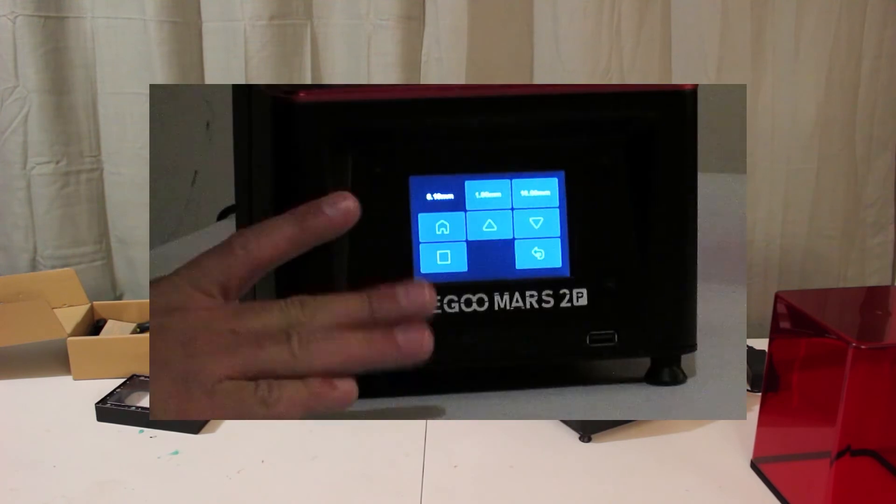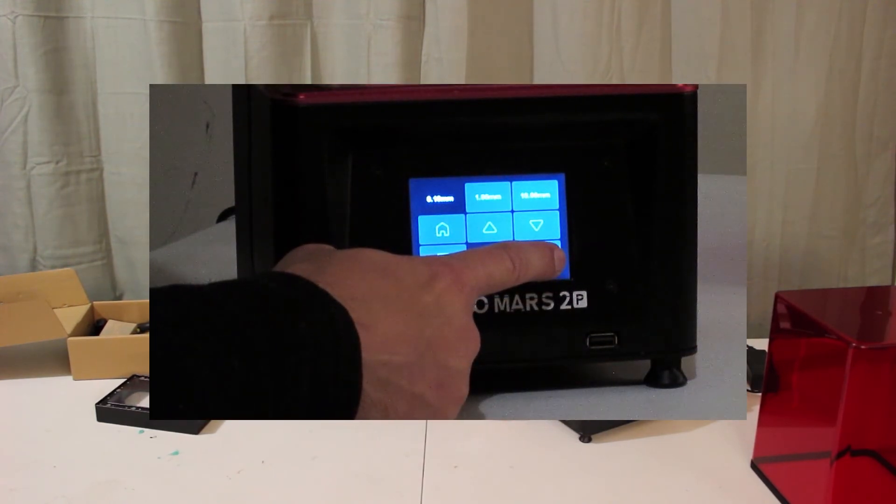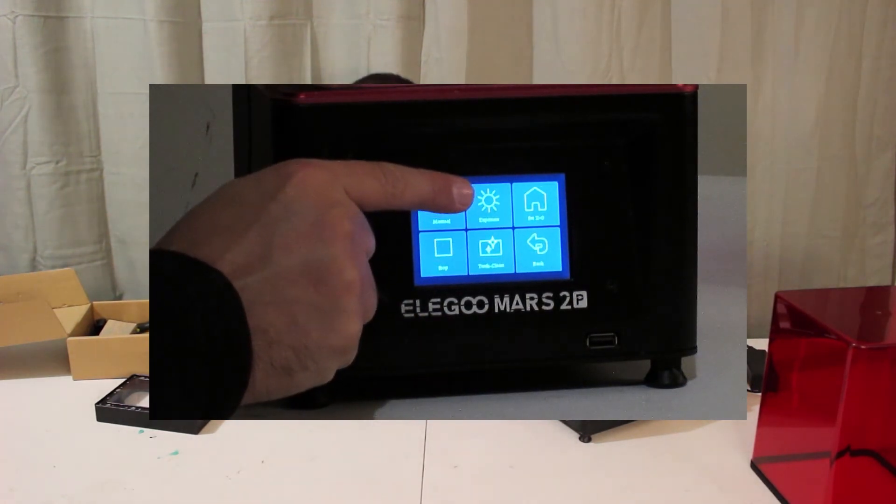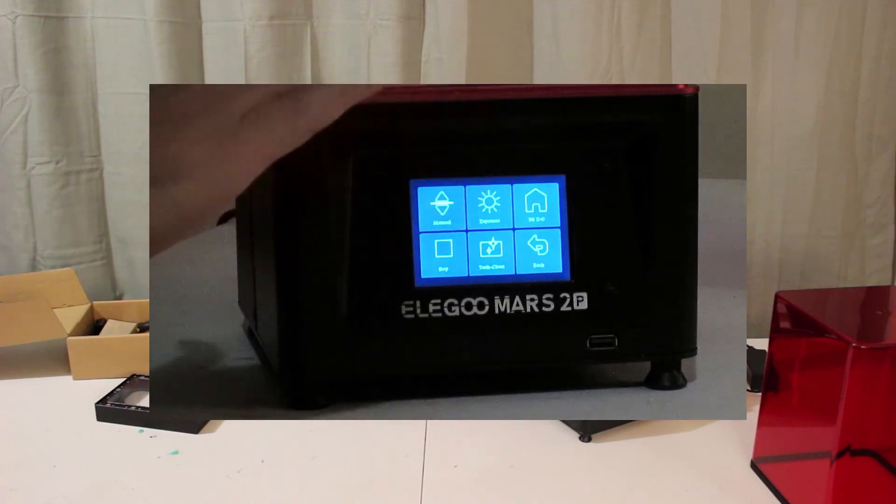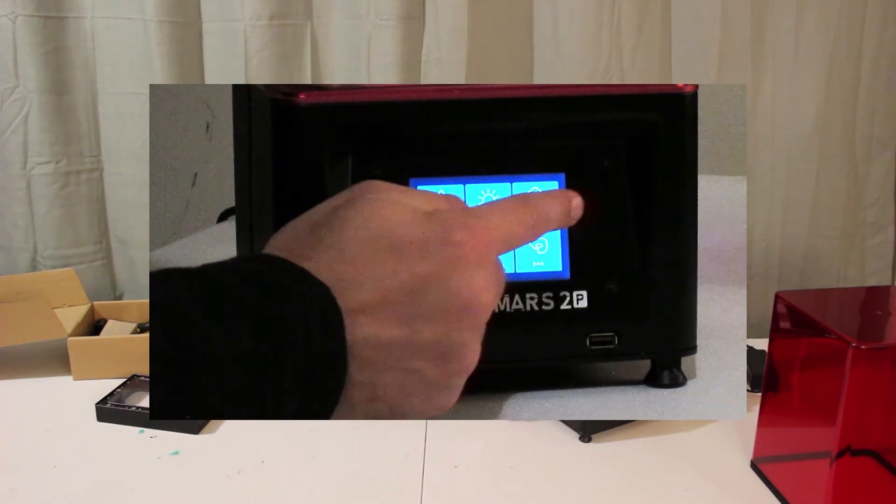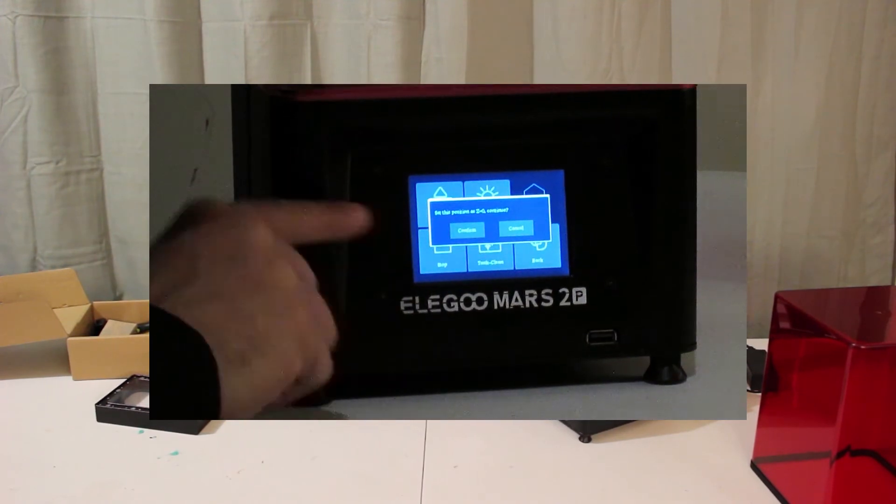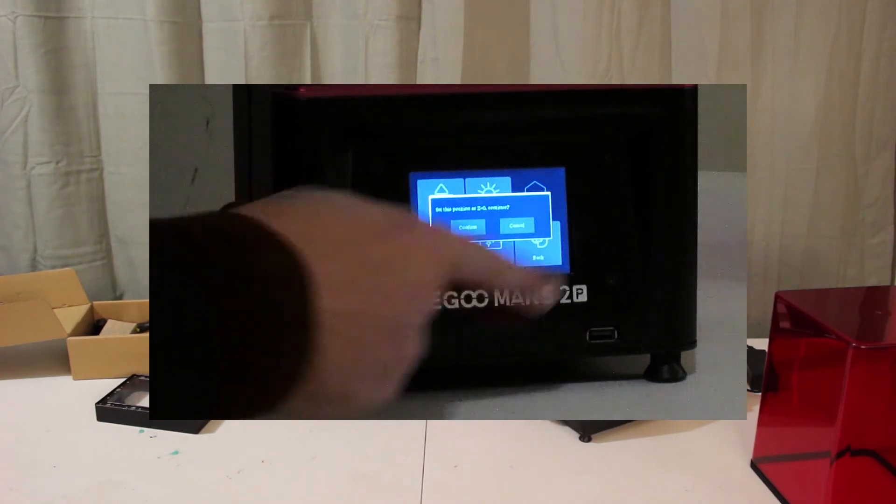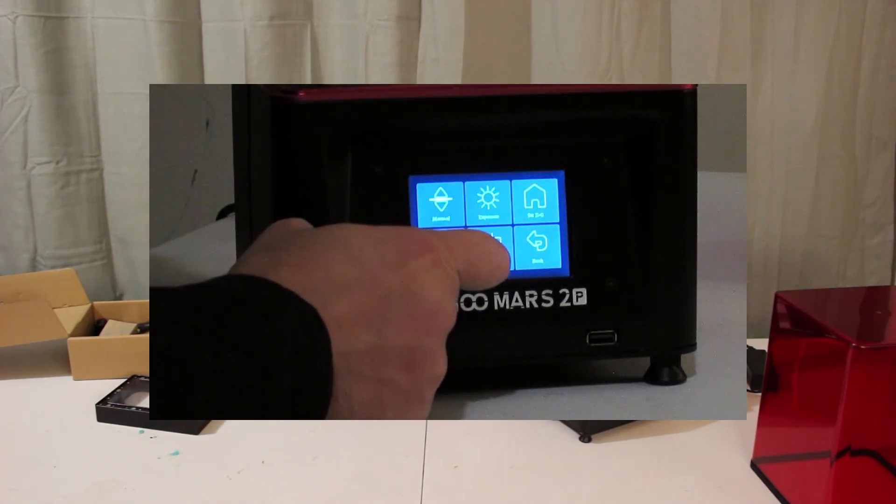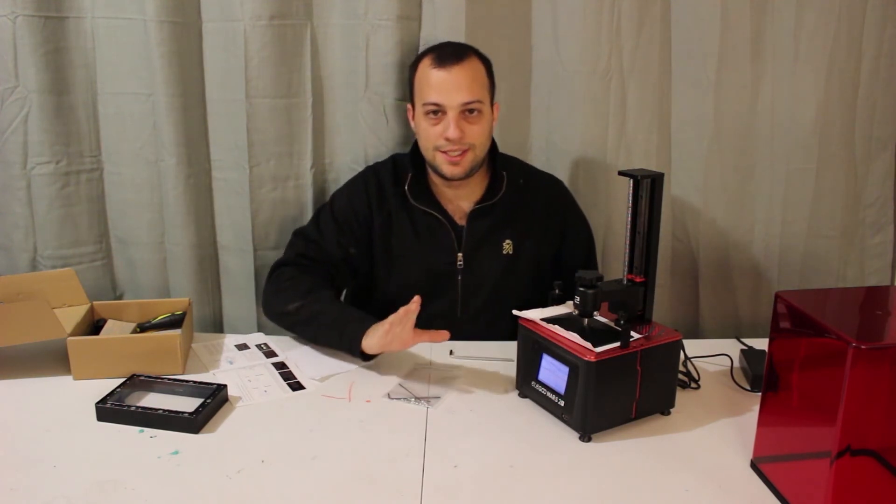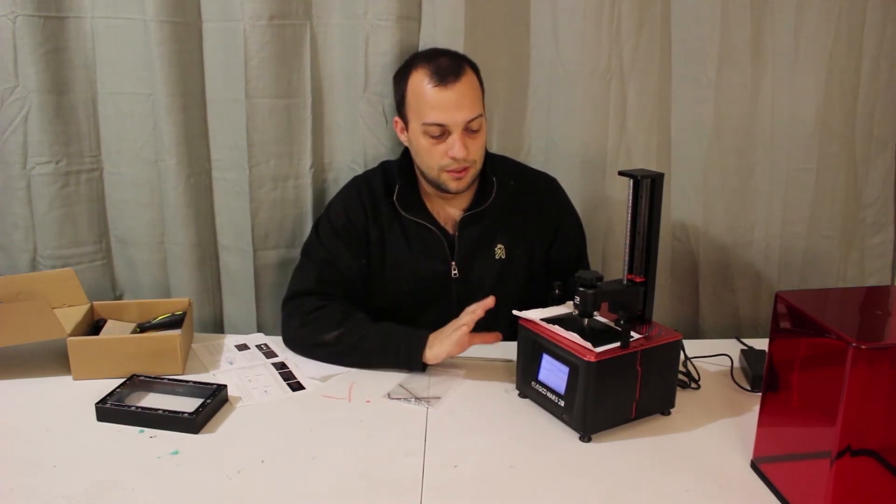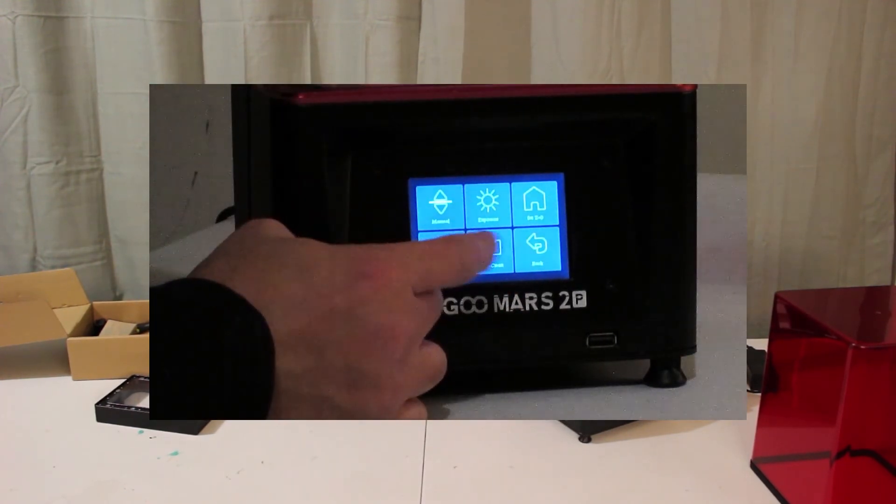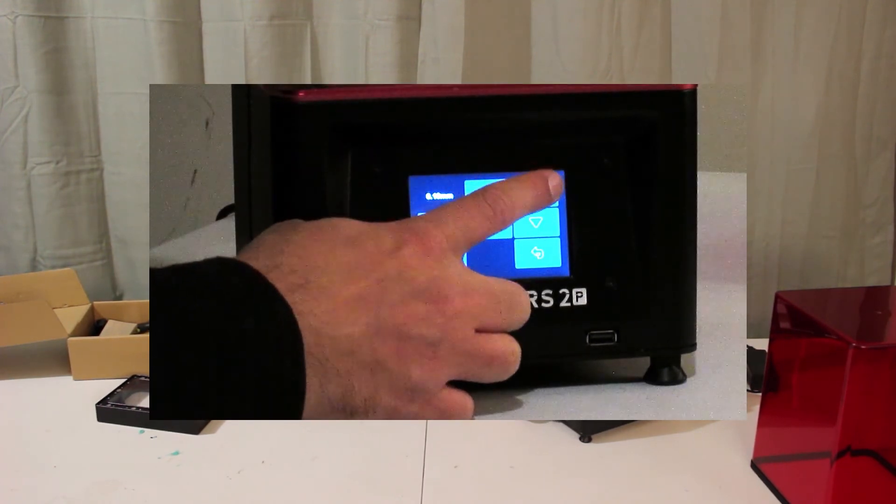Before we do anything else, we'll go ahead and go to the back button, and we're going to go ahead and hit the set Z equals zero. This is going to say this is the best position, zero position, for the Z axis. And it says right here, set this position as the Z equals zero, continue, and you hit confirm. Now we're done, we have set the Z equals zero, we've programmed it.